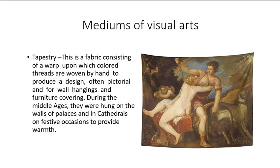Next is tapestry — a fabric consisting of a warp upon which colored threads are woven by hand to produce a design, often pictorial, used for wall hangings and furniture coverings. During the Middle Ages, they were hung on the walls of palaces and cathedrals on festive occasions to provide warmth. Tapestry is made using silk threads. The advantage is that it does not age over time unless destroyed or burned, but the process of creating tapestry takes years to finish. Only wealthy families or merchants could afford it, making it a symbol of social status.